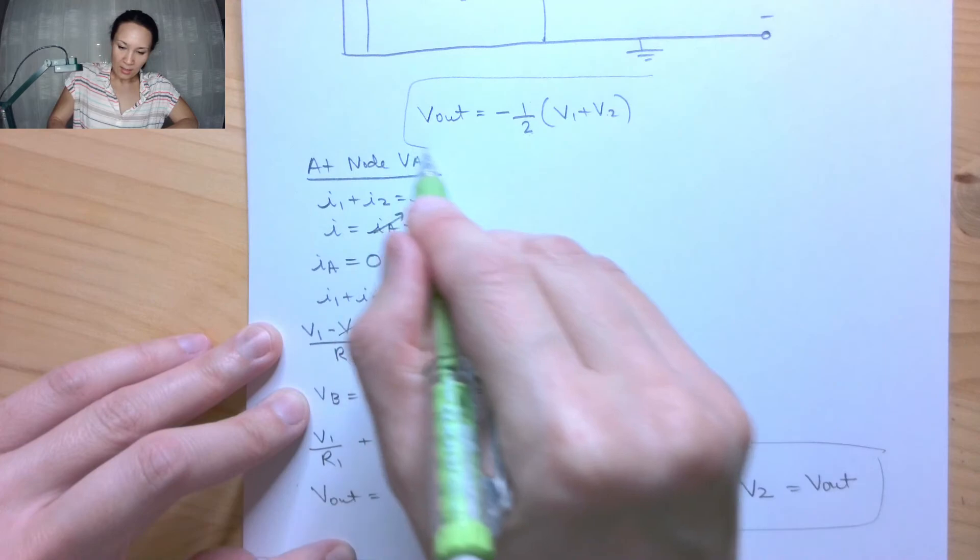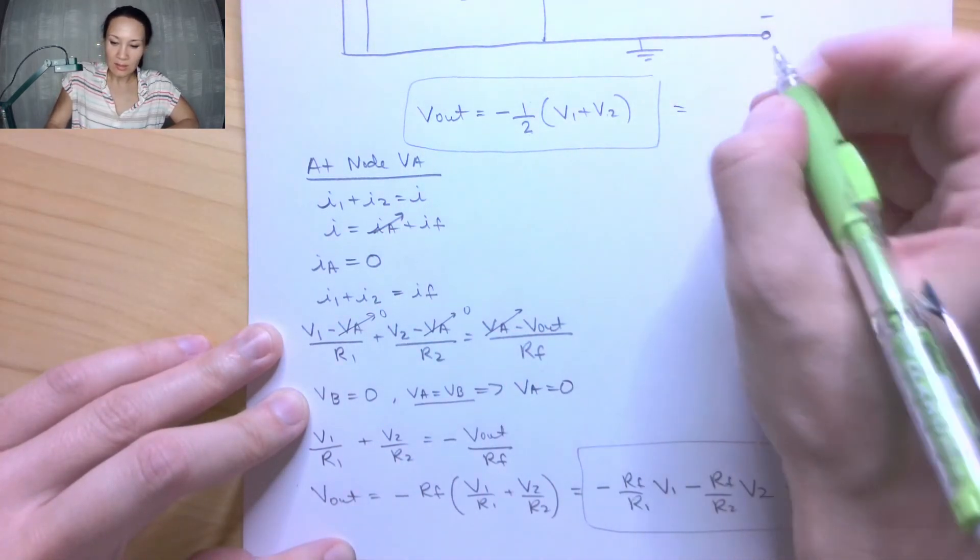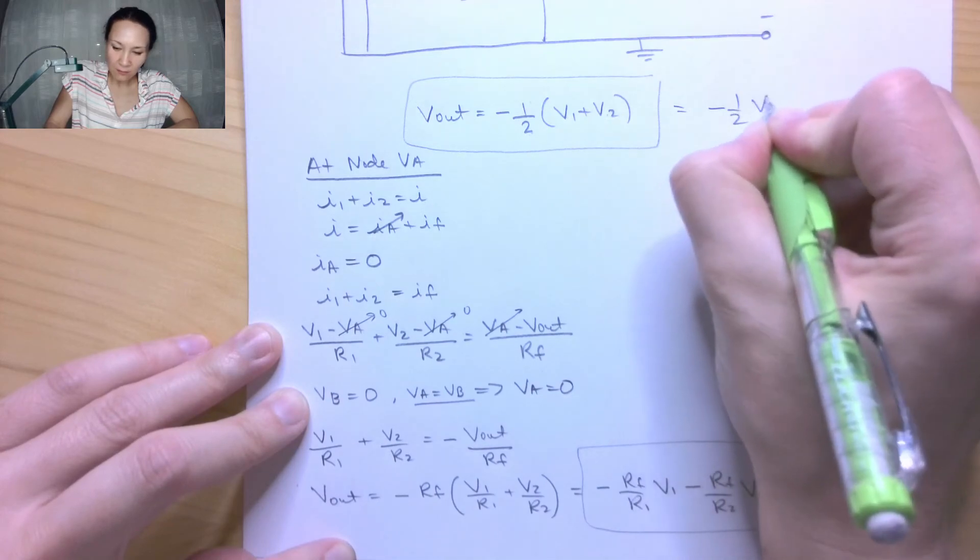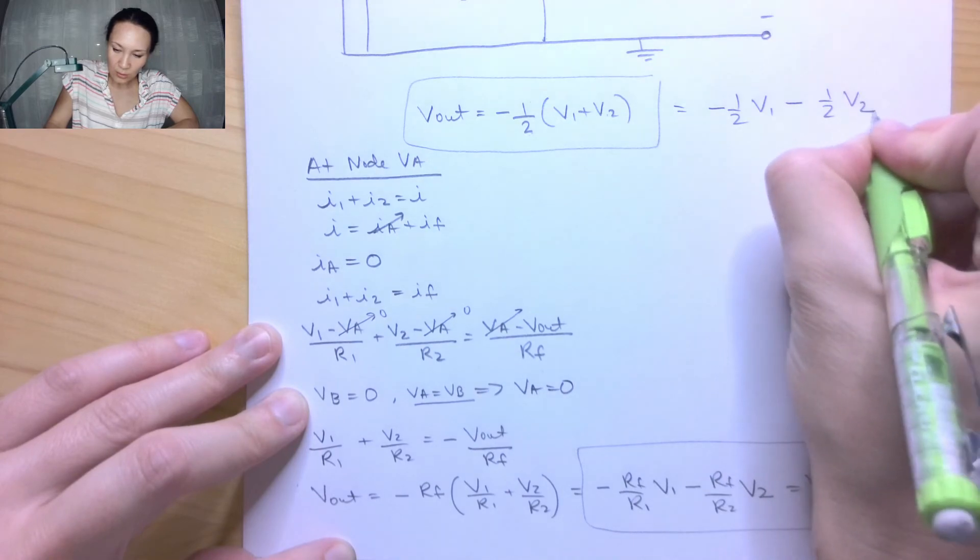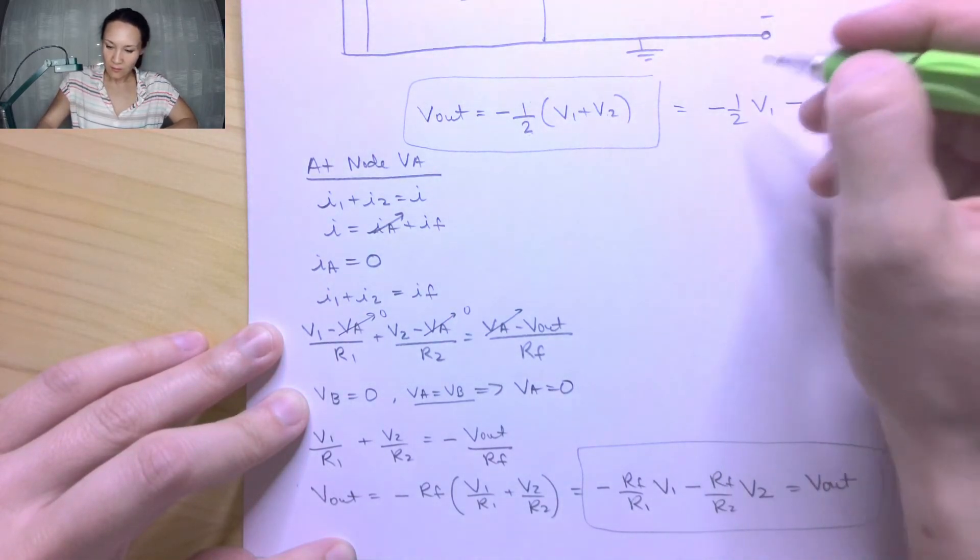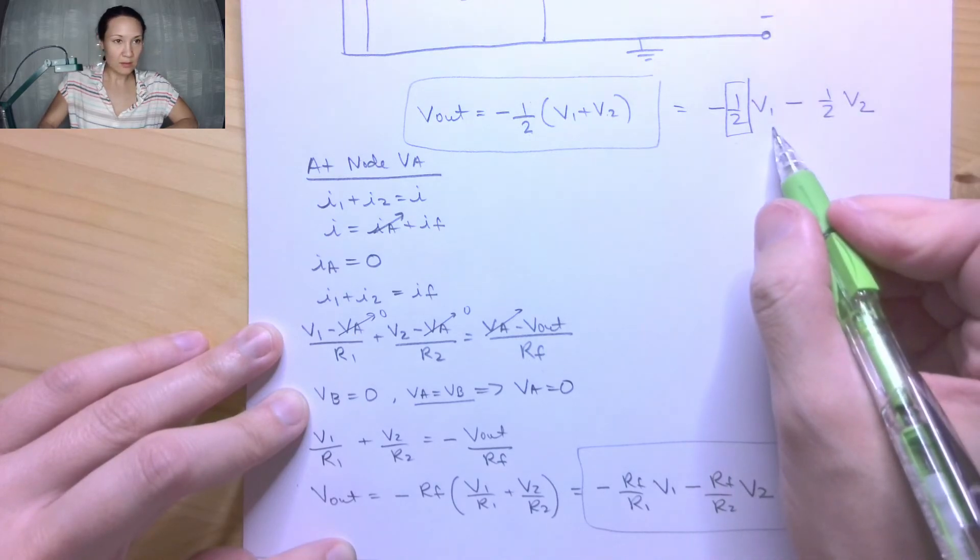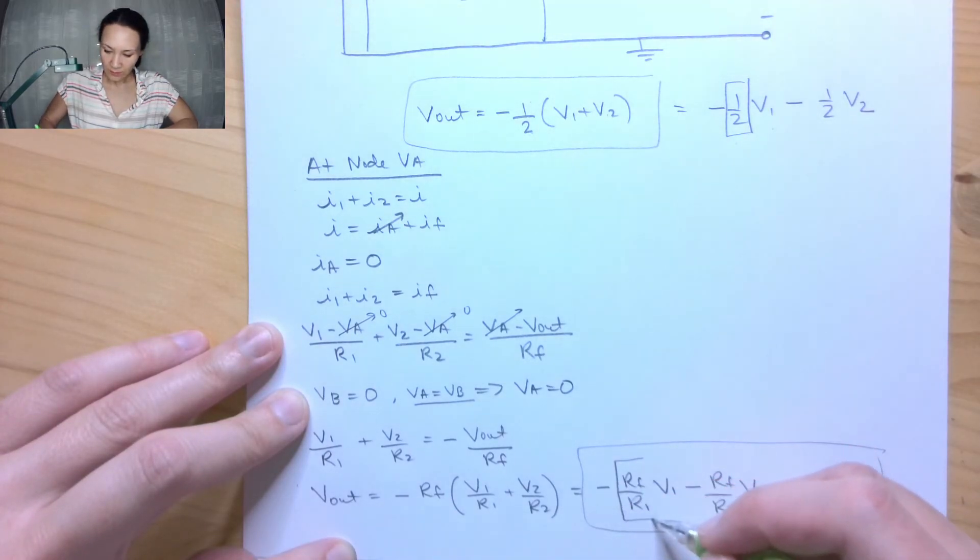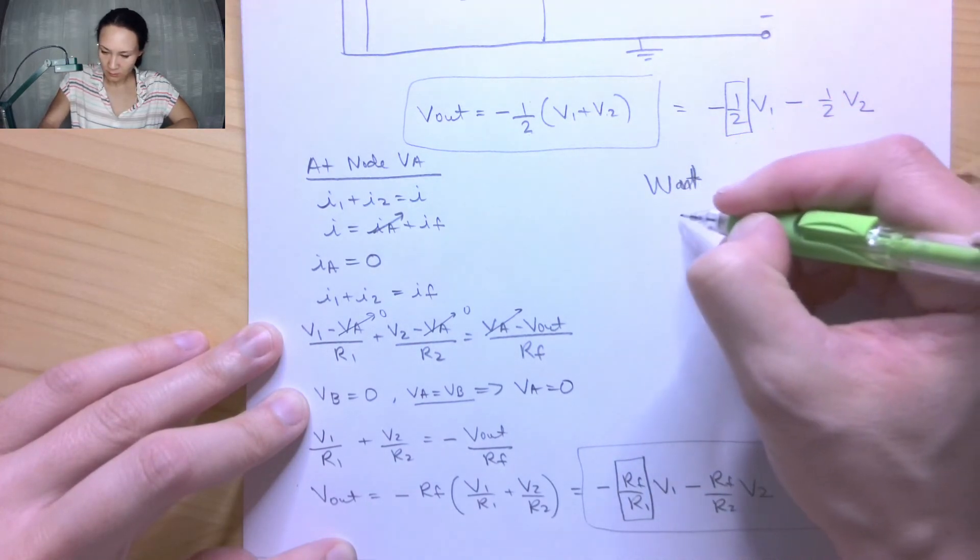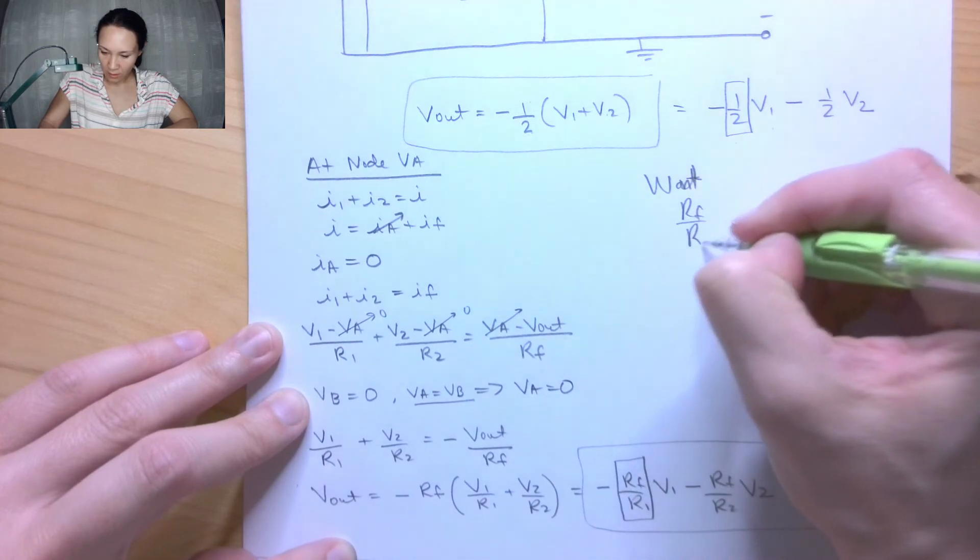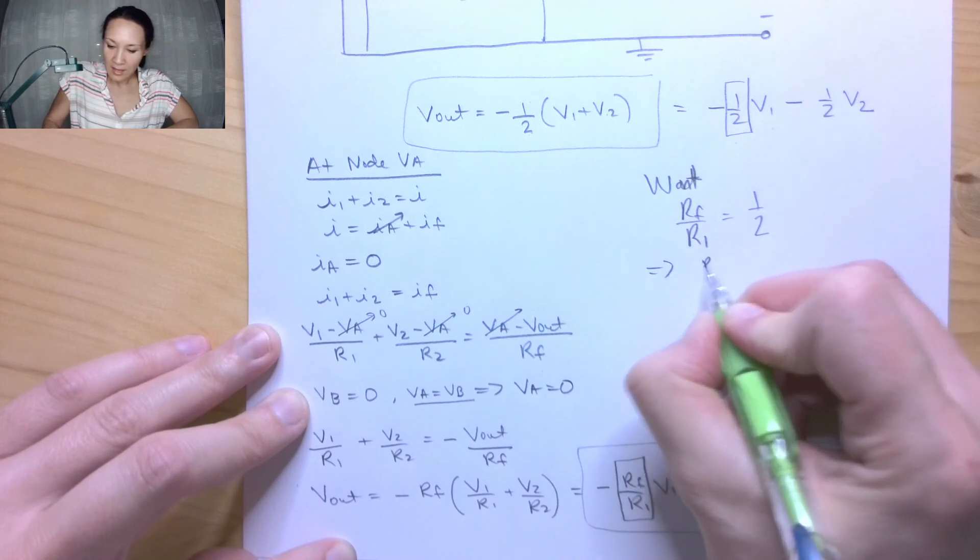Now this Vout here, we want to kind of match our coefficients with this Vout. So if I multiplied this out, this would be negative 1 half V1 plus negative 1 half V2, right? So the coefficients here, this 1 over 2, the coefficient in front of this V1, well, that's this thing here. So we want Rf over R1 to equal 1 over 2.